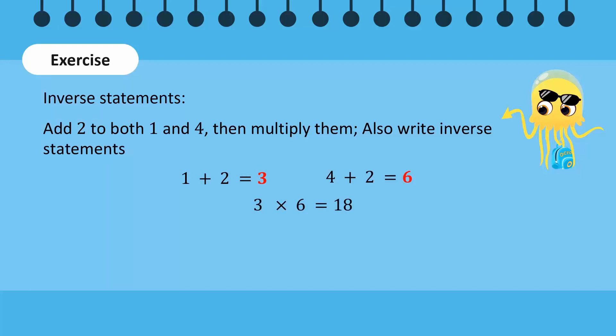First, we divide 18 by 6, resulting in 3, and then we divide 18 by 3, resulting in 6. The two statements, 18 divided by 6 and 18 divided by 3, are the two inverse statements.